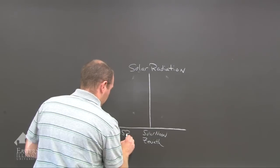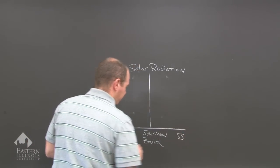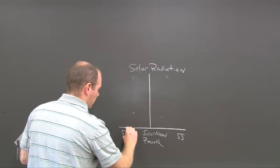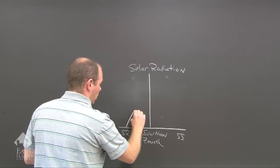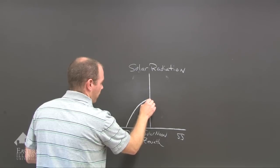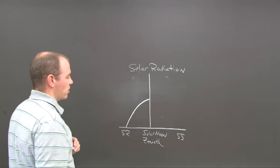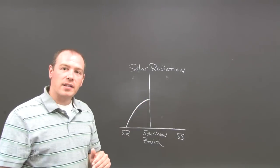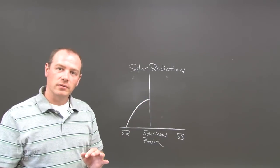So this is sunrise and this is sunset. As the sun rises in the east, we get radiation that starts to build. And then, when the sun is directly overhead, that is the maximum solar radiation.